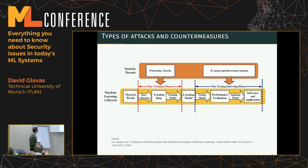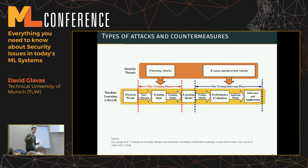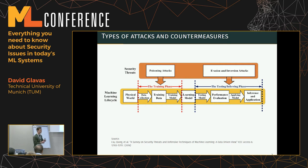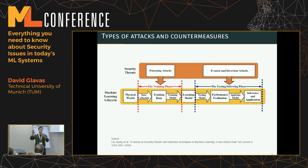Let's start with poisoning attacks. Here the adversary tries to mess with the training set of the target model. For example, with a spam detector, an attacker could insert new examples, modify existing ones, or flip their labels — all trying to influence the behavior of the final model by corrupting the training data. These are categorized as poisoning attacks.